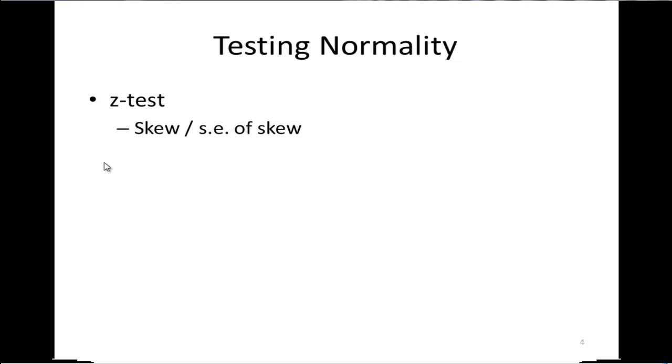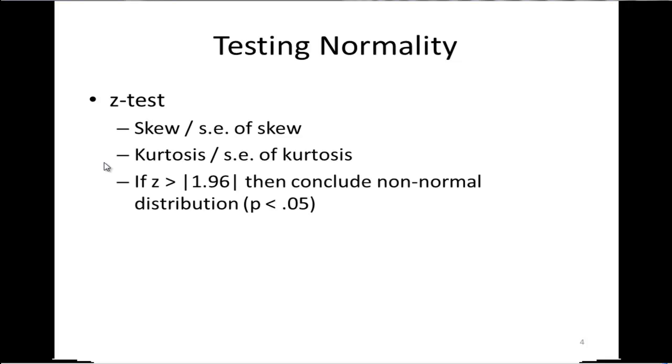The z-test is skew divided by standard error of skew, or kurtosis divided by standard error of kurtosis. If the z-value associated with this ratio is equal to or greater than 1.96, then people will conclude that the distribution is non-normal.